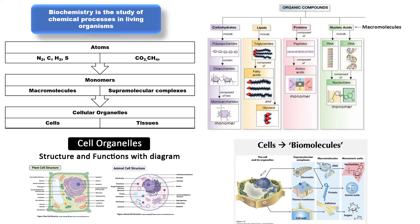Looking at the diagram, you can see a cell, and from this cell we have supramolecular complexes — examples include chromatin, plasma membrane, cell wall, and virus. We also have macromolecules such as DNA, proteins, and cellulose. And then we have the monomeric units, which are the monomers.